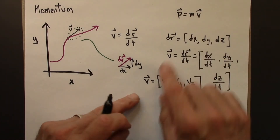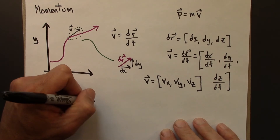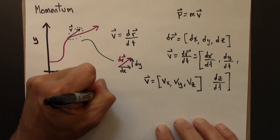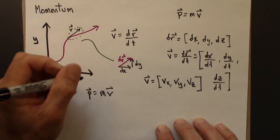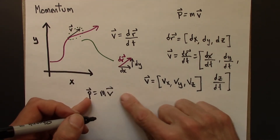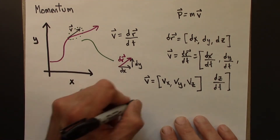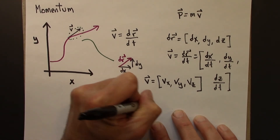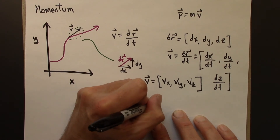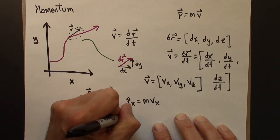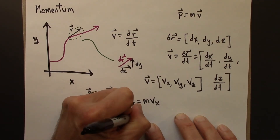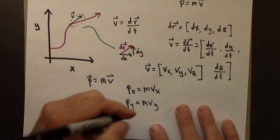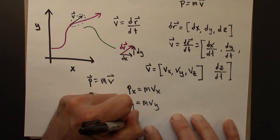Going back to momentum, we have p equals mv. We can think about the individual components: px equals m times vx, and py equals m times vy, and similarly for the z component.